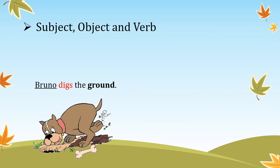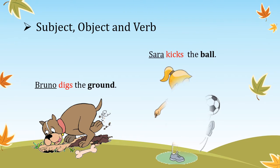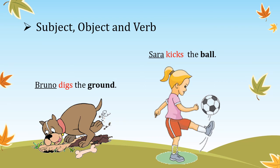We will see one more example. Sarah kicks the ball. In this sentence we are talking about Sarah, so Sarah is the subject. Kicks is an action word, so it is a verb. And what is Sarah kicking? Sarah is kicking the ball, so the ball is the object.